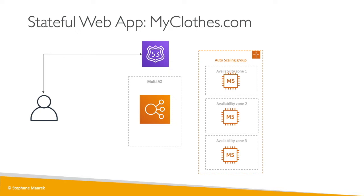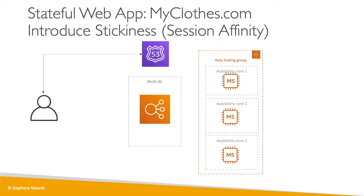Here's the kind of architecture we saw in the previous lecture: user, Route 53, multi-AZ ELB, Auto Scaling Group across 3 AZs. The problem is the user creates a shopping cart on one instance, but the next request goes to a different instance and the cart is lost. The user keeps losing their shopping cart every time, which is a really bad experience. So how do we fix this?